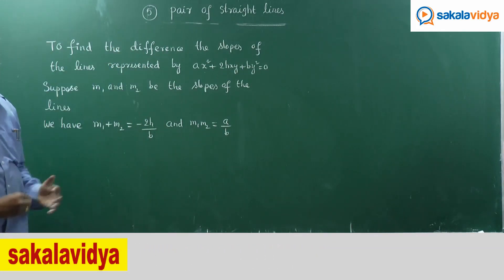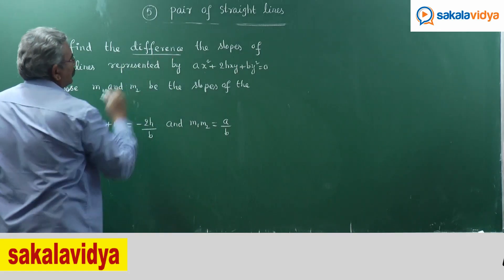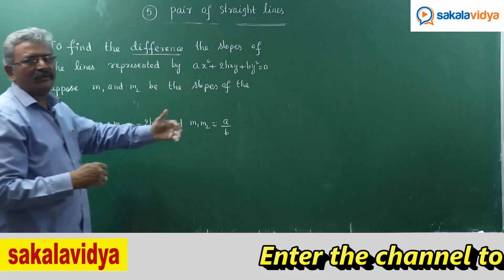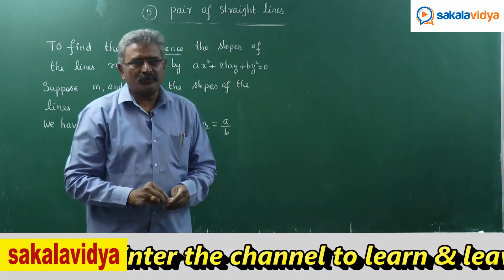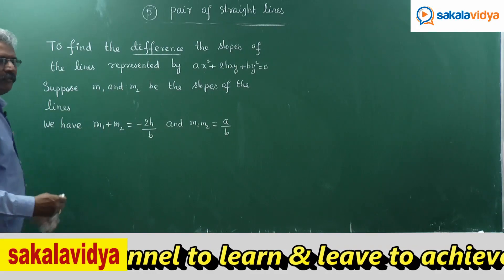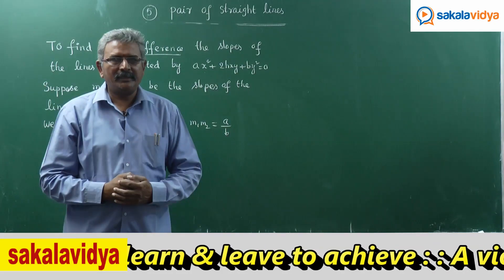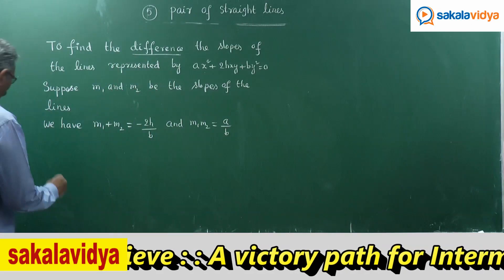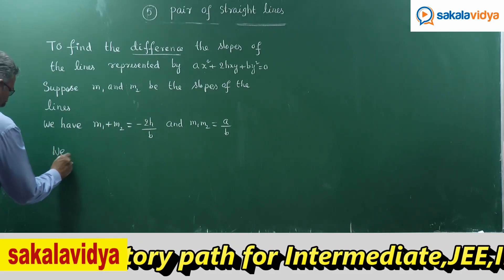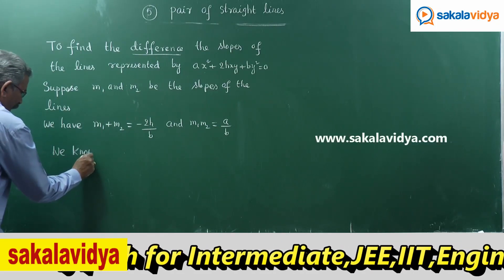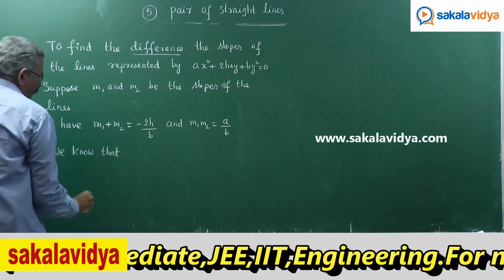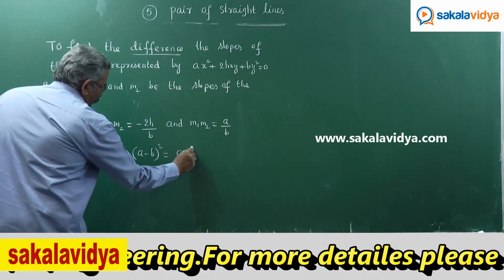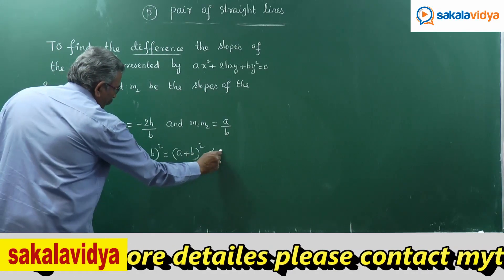Now we need to find the difference. Difference means M1 - M2, or the numerical difference |M1 - M2|. With the help of an algebraic identity, we know that (A - B)² = (A + B)² - 4AB.